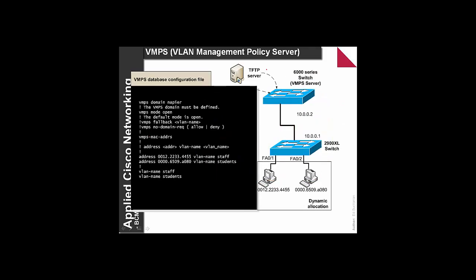On the VMPS server, we typically have our configuration on a TFTP server. When the machine is booted, it loads up the VMPS file, defines the domain, and then defines the mapping — in this case, the VLAN name 'staff' is allocated to a specific MAC address. In this way, we can allocate our VLANs in terms of our VLAN name.